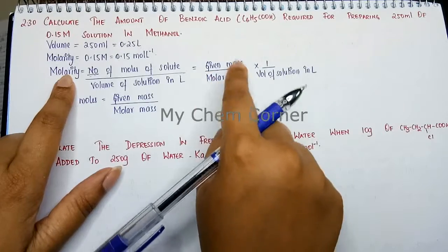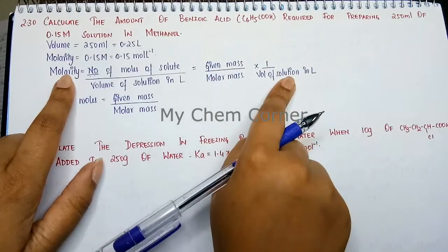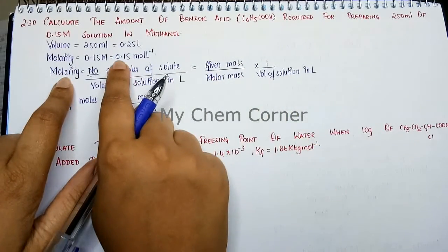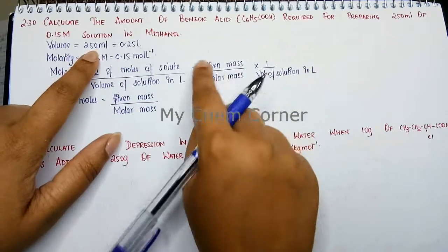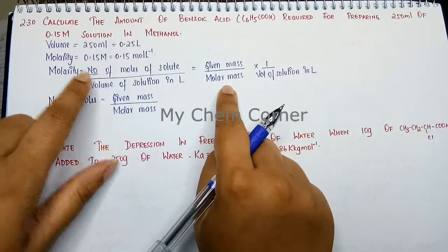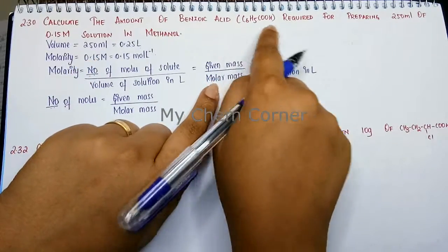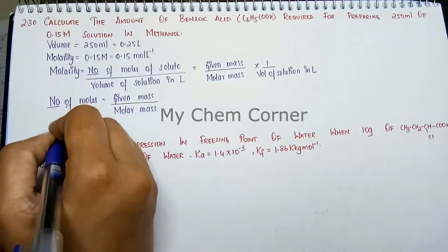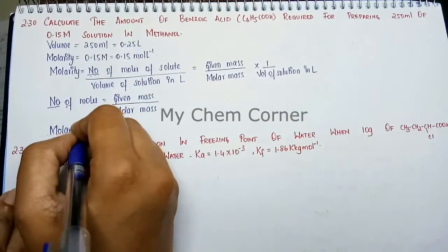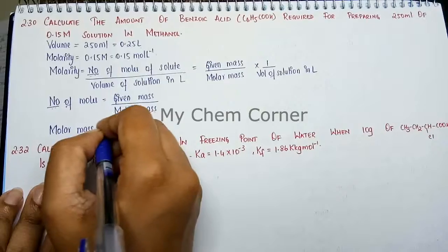From this formula, let's identify what we have and what we need. We have the molarity, which is 0.15, and the volume of solution. We need to calculate the given mass. We don't have the molar mass yet, but we can calculate it from the formula of benzoic acid.